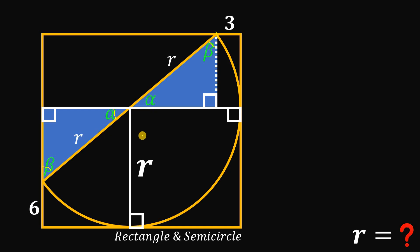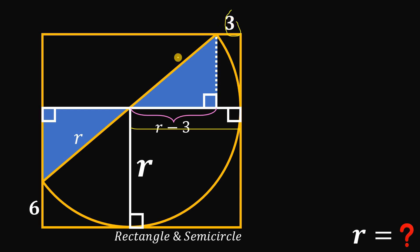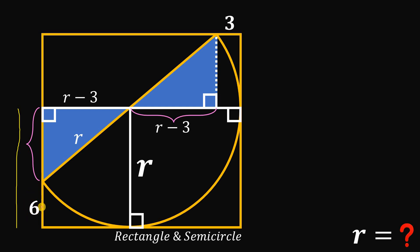The next question is: how long is this segment? We know these two blue right triangles are congruent. This segment is the measure of the radius of the semicircle minus three, so it equals r minus three. Since the two blue triangles are congruent, this corresponding side must also equal r minus three. Next, this segment equals the radius minus six, or simply r minus six.